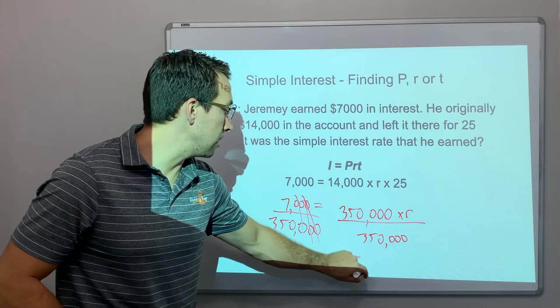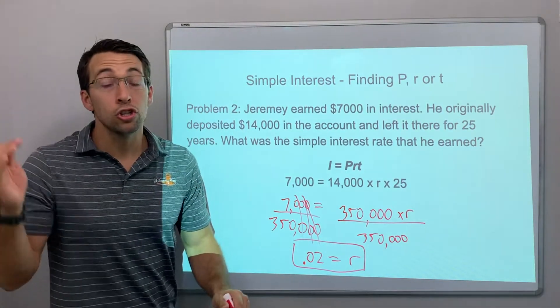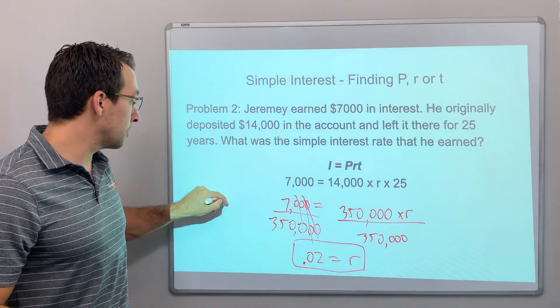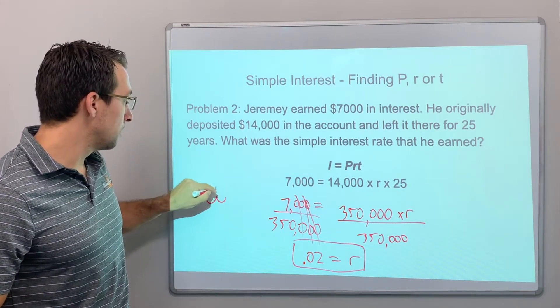What was the interest rate? We earned 2%, 0.02. So we'll go over two decimal places, 0.02.